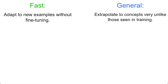So language models like ChatGPT are both fast and general. They can adapt to new examples without fine-tuning, which is critical because these models see tens of thousands or even hundreds of thousands of queries a minute — you don't have the space or the time to update the model's parameters for each query. And they're also very general: they can extrapolate to new concepts very unlike those seen during training, as demonstrated by our made-up language example.